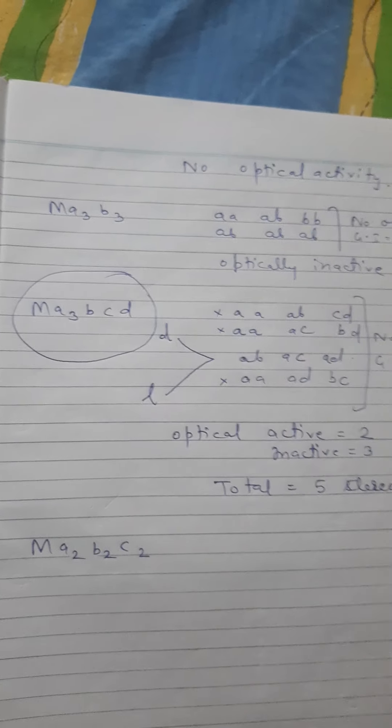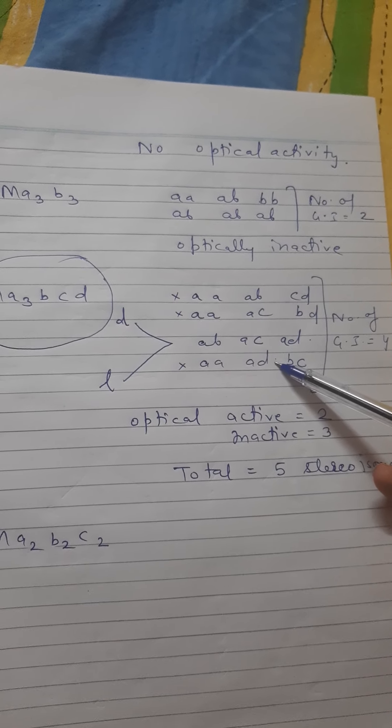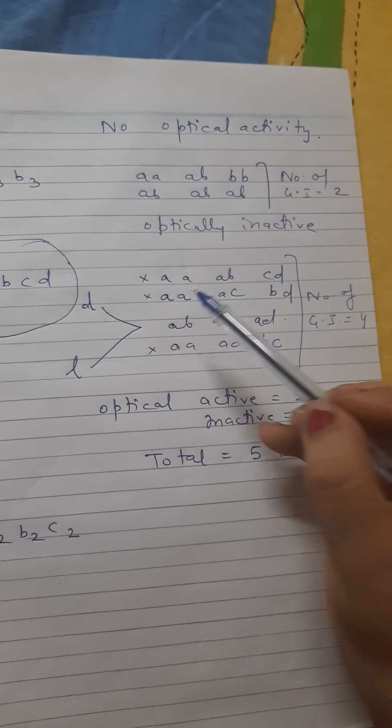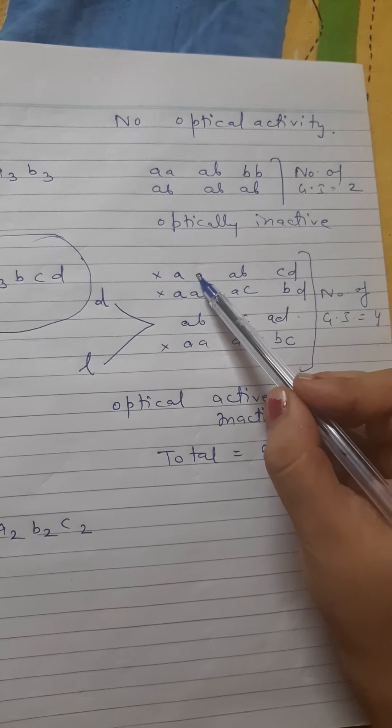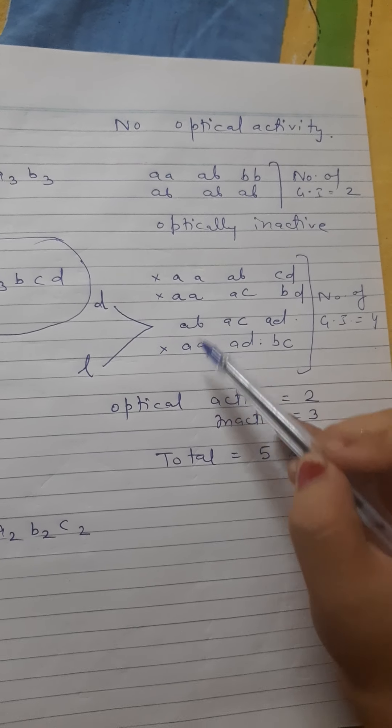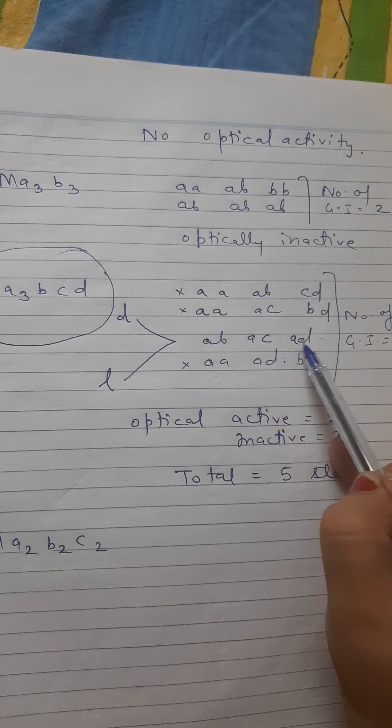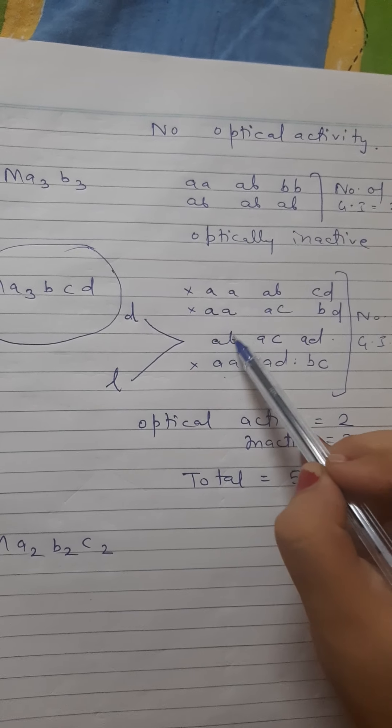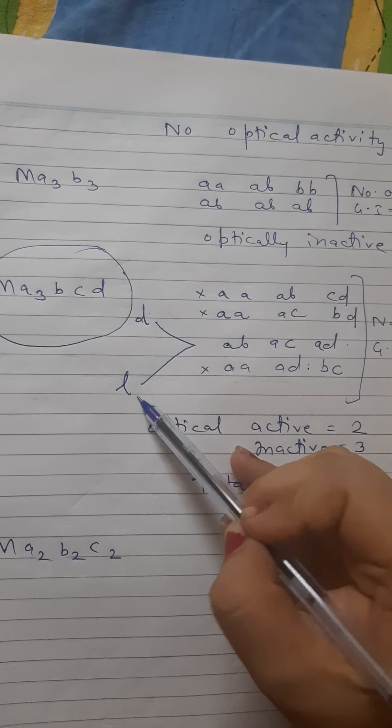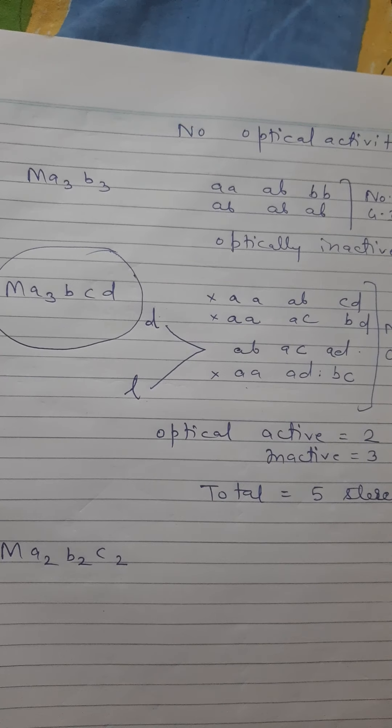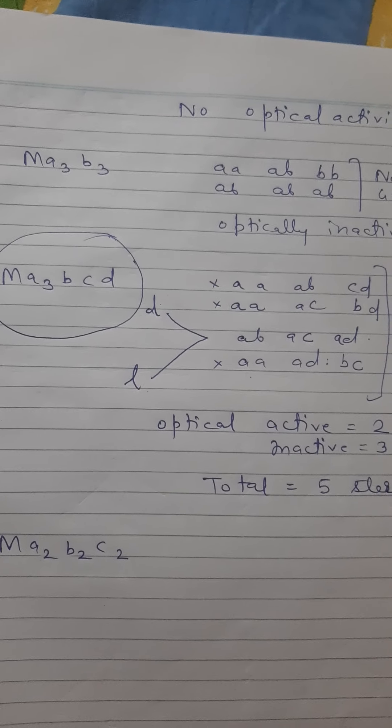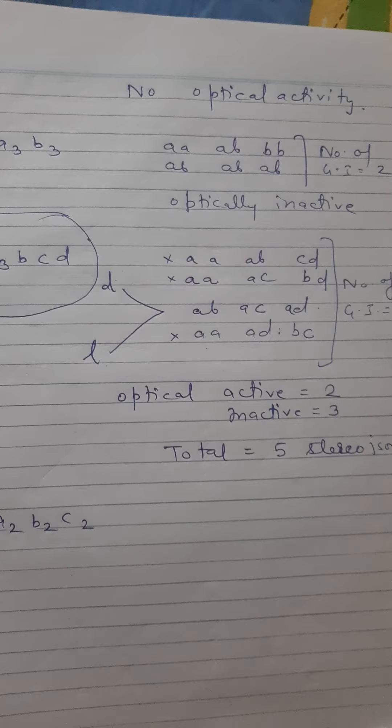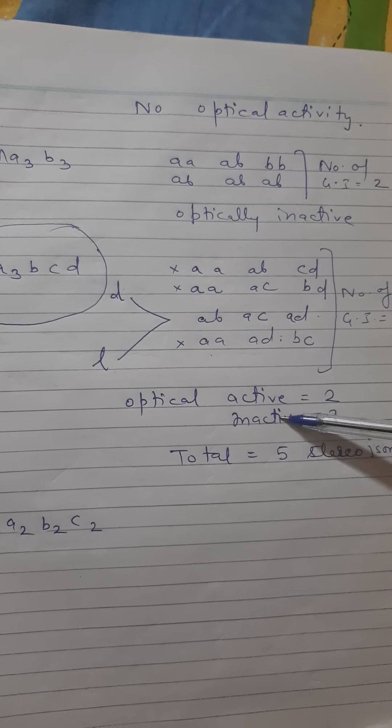Now MA3BCD - we have four combinations. Number of geometrical isomers is 4. But optical activity cancels in some cases. However, there are two forms, D and L. D is dextrorotatory in which rotation is observed on the right-hand side, and L is levorotatory when rotation is observed on the left-hand side. So optically active: 2, and inactive: 3. So total 5 stereoisomers are possible.